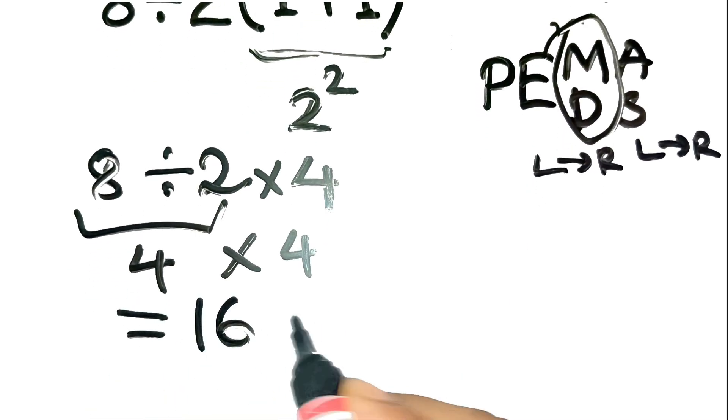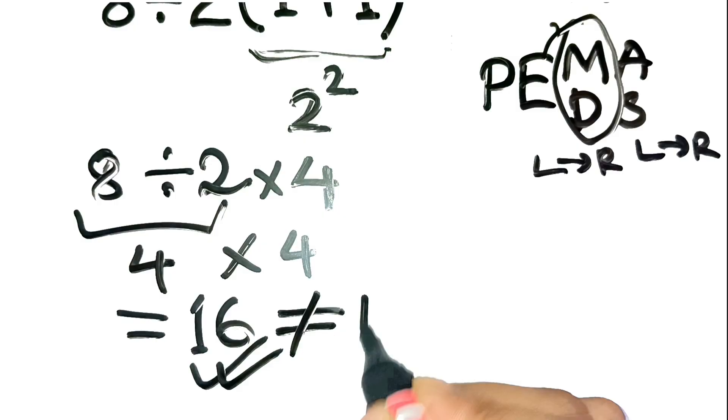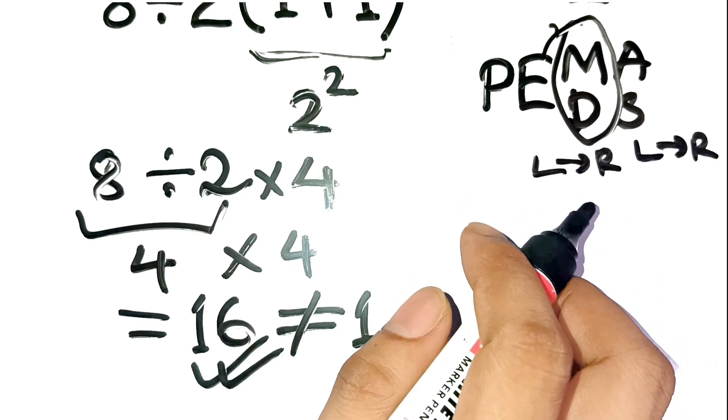So, the correct answer is 16, not 1. Crazy, right? A tiny detail in the order makes all the difference.